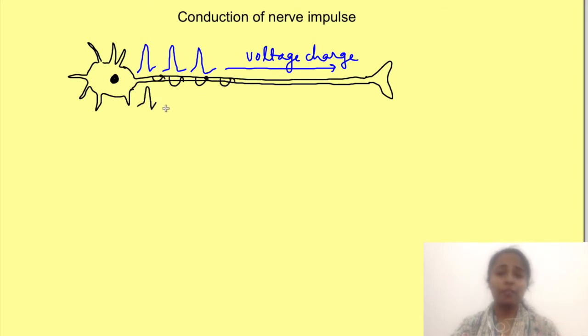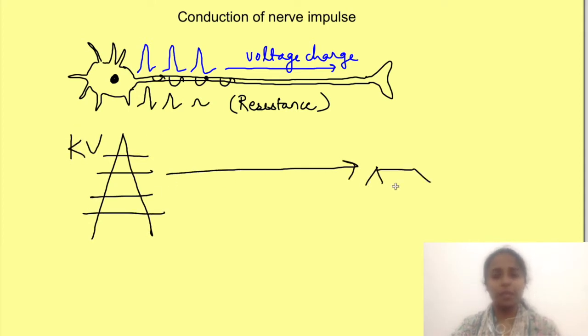But whenever charges flow there is always drop in potential due to the resistance which the charges face while traveling. It's like at the electricity generation source the power is in kV, but by the time it reaches the houses it is much less. So there is a drop of potential while it travels through wires.